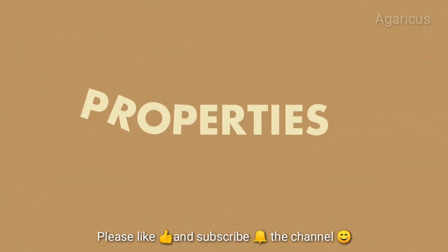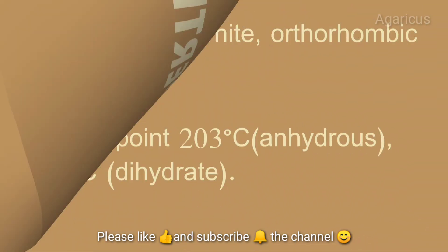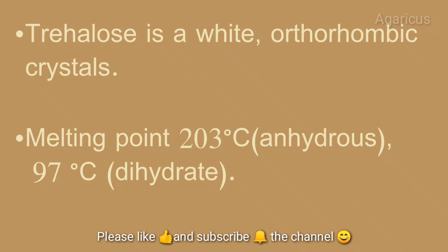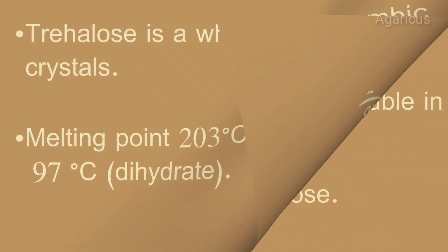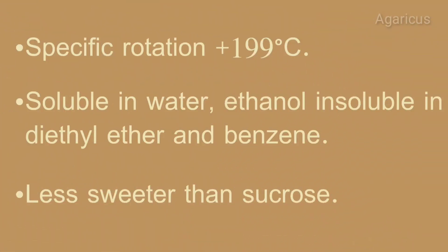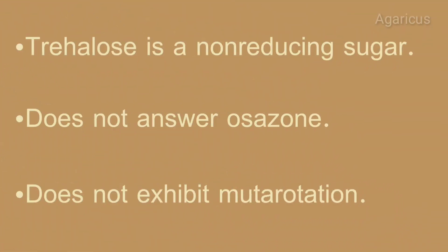Next, we can discuss the properties of trehalose. Trehalose is a white orthorhombic crystal. Its melting point is 203 degrees Celsius in anhydrous form and 97 degrees Celsius in dihydrated form. Specific rotation is 199 degrees. It is soluble in water and ethanol, but insoluble in diethyl ether and benzene. It is less sweet than sucrose. Trehalose is a non-reducing sugar, does not answer the osazone test, and does not form mutarotation.